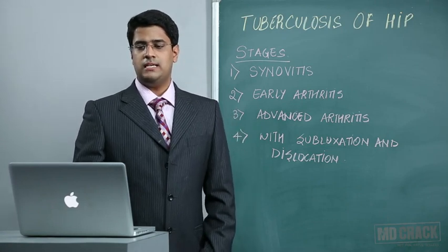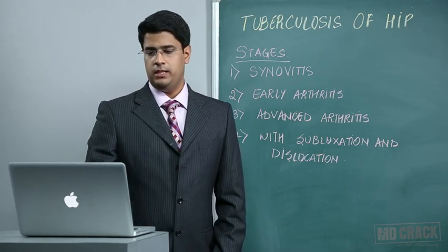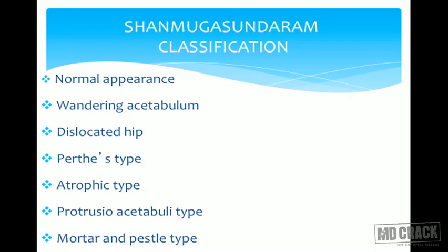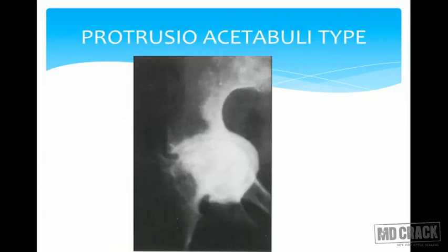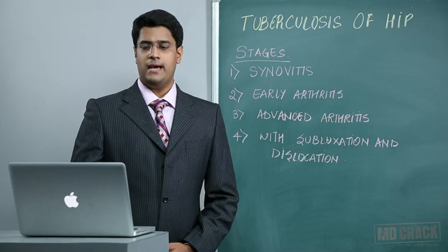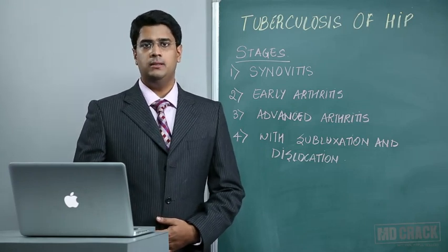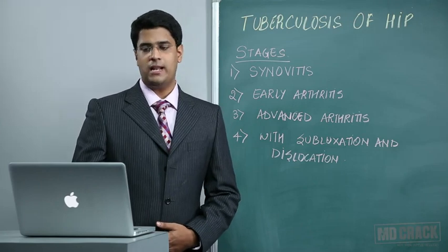Tuberculosis hip is classified using the Shanmukhasundaram classification, which describes different types: normal appearance, wandering acetabulum, dislocated hip, Perthes type, atrophic type, protrusio acetabuli type, and mortar and pestle type — this can come in MCQs. Other investigations include synovial fluid analysis, synovial biopsy, the Mantoux test, and arthrography.